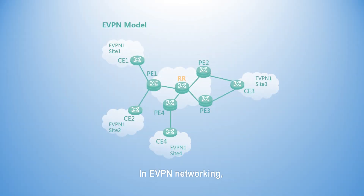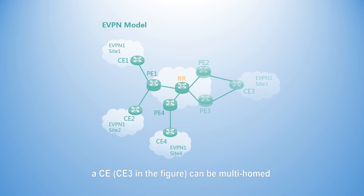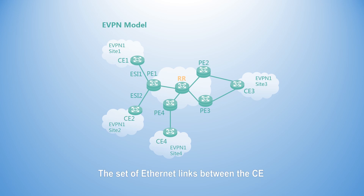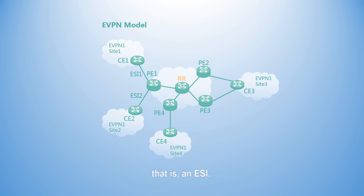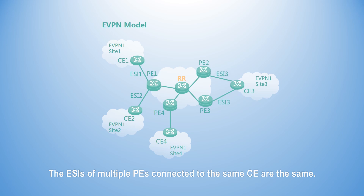In eVPN networking, a CE (CE3 in the figure) can be multi-homed to two or more PEs. The set of Ethernet links between the CE and different PEs is an Ethernet Segment, ES. An ES must have a unique non-zero ID, that is an ESI. The ESIs of multiple PEs connected to the same CE are the same.